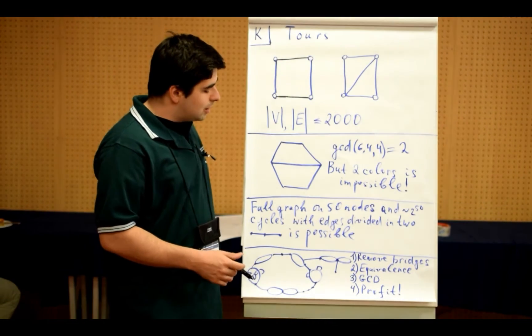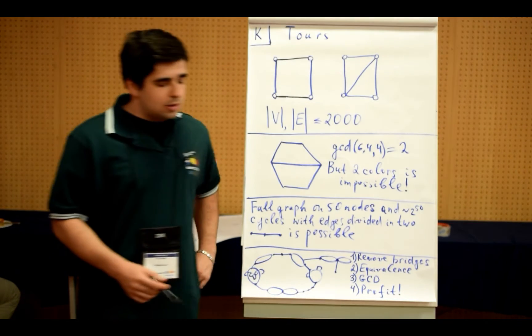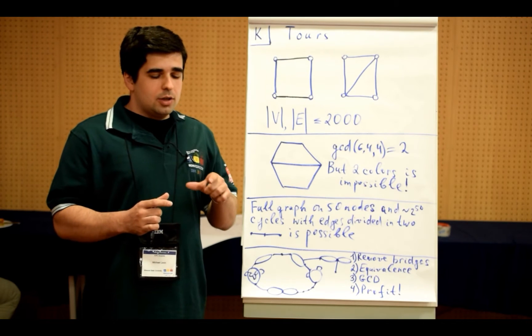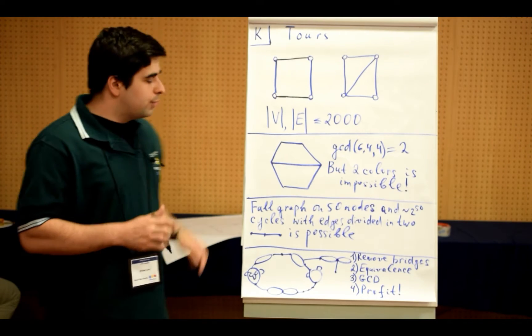Actually, if we think about that, then we can find an equivalence class for each edge such that all edges in the equivalence class must be in all cycles together. And how to find that?